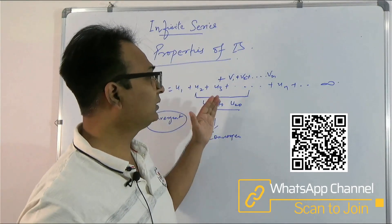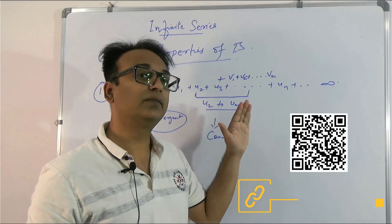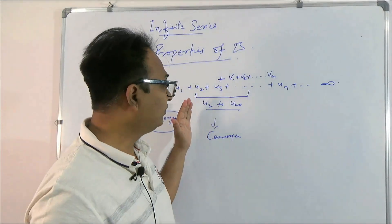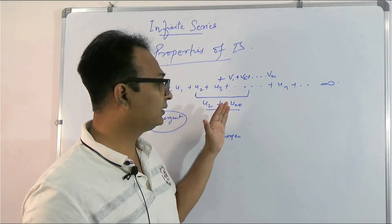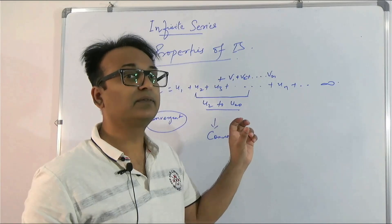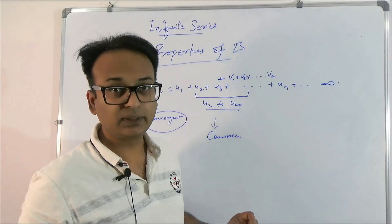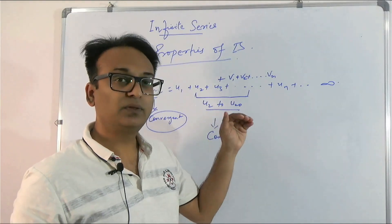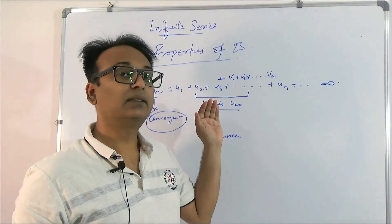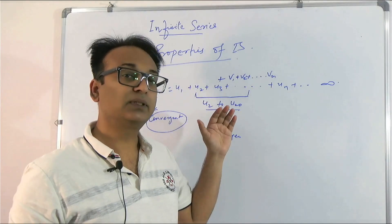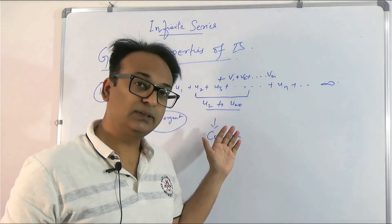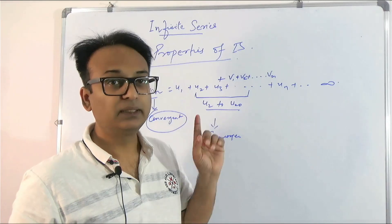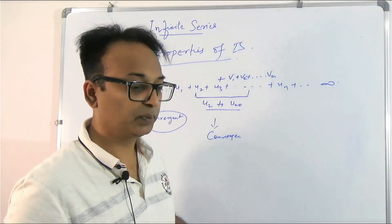So this is the first property: if in an infinite series we have addition or removal of a certain finite number of terms, the nature of the series — whether it was convergent, divergent, or oscillatory — remains the same.